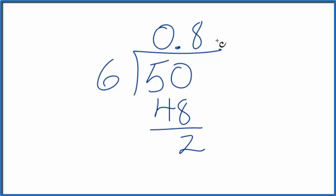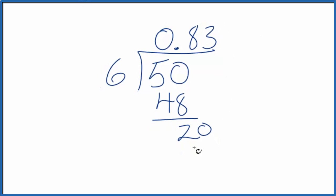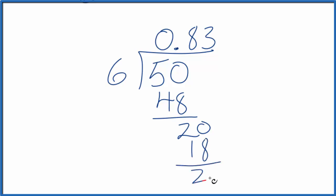It doesn't go into 2, but if we move over 1, we can call this 20. 3 times 6 is 18 and we end up with 2. So we move over 1, 20, and it goes in here 3 times. And that 3, it's just going to keep looping like that.